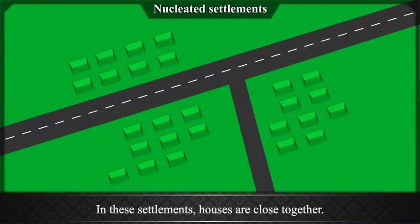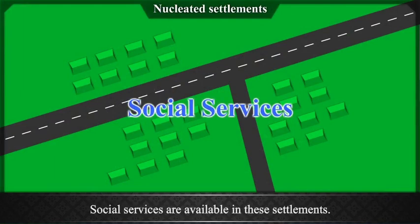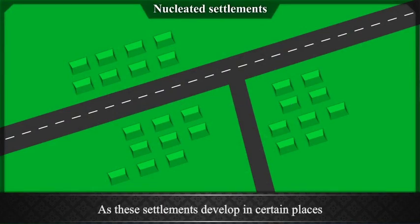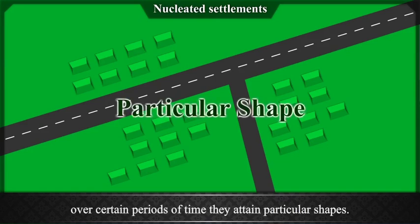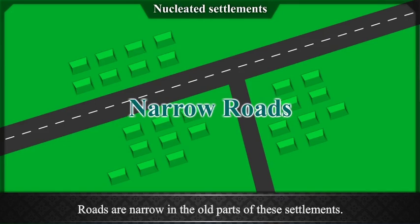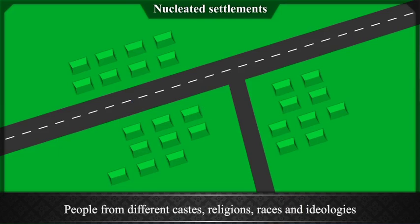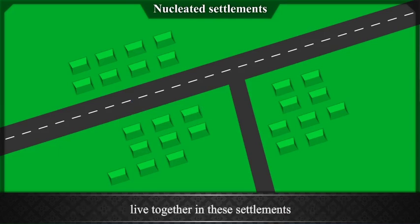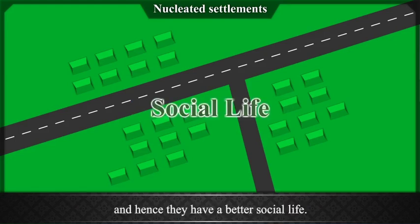Characteristics of nucleated settlements: Houses are close together and social services are available. As these settlements develop in certain places over certain periods of time, they attain particular shapes. Roads are narrow in the old parts of these settlements. People from different castes, religions, races, and ideologies live together, giving them a better social life.